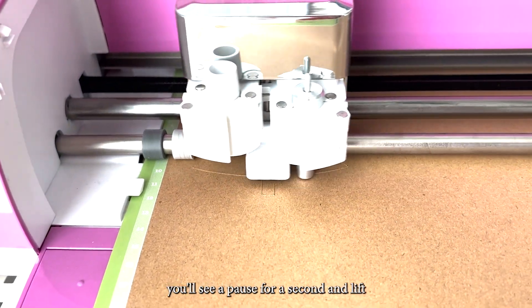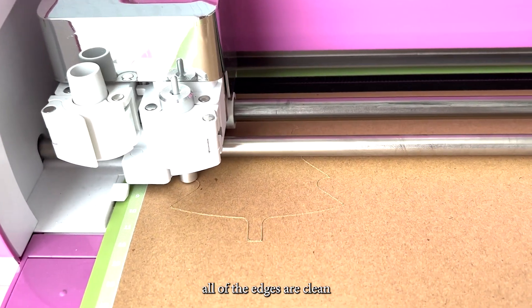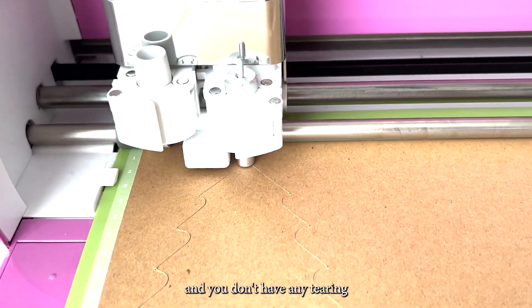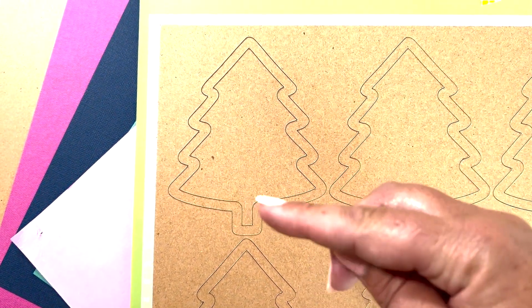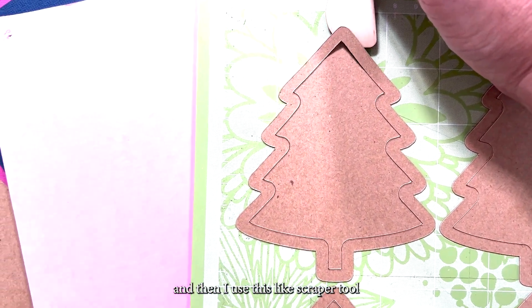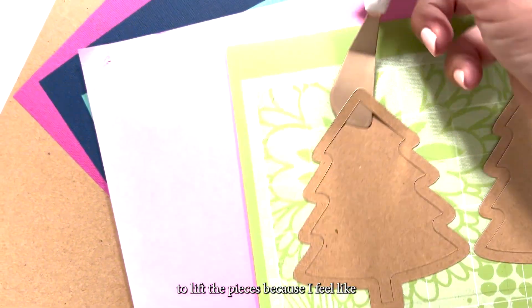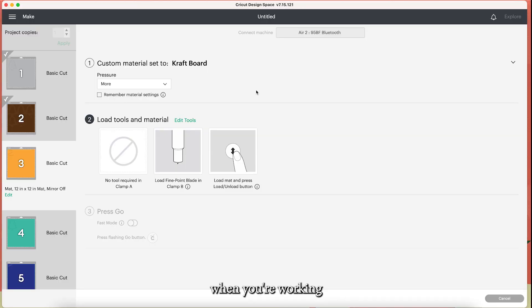So as it's going around its design, you'll see a pause for a second and lift and then continue to cut. That will make sure all of the edges are clean and you don't have any tearing when you release the design from the board. So I usually flip mine over and peel off the excess and then I use this scraper tool to lift the pieces because I feel like it's easier when you're working with these smaller things.